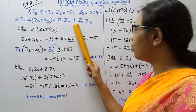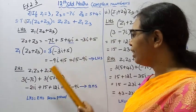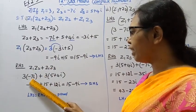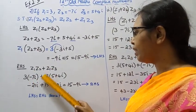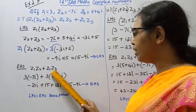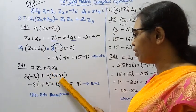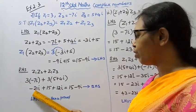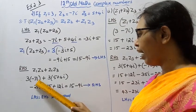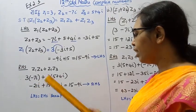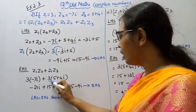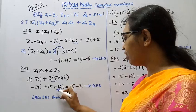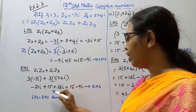Right hand side: Z1 Z2 plus Z1 Z3. Z1 is 3, Z2 is minus 7i, Z3 is 5 plus 4i. 3 into minus 7i equals minus 21i. 3 into 5 plus 4i: 3 into 5 is 15, 3 into 4i is 12i.